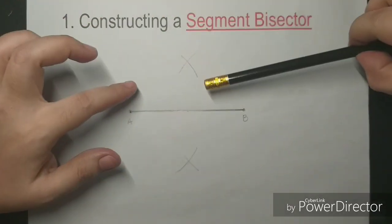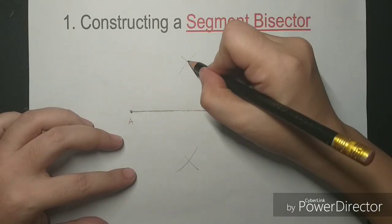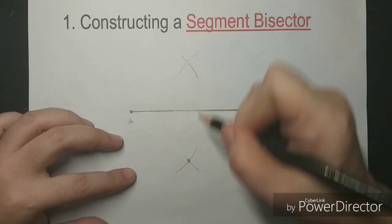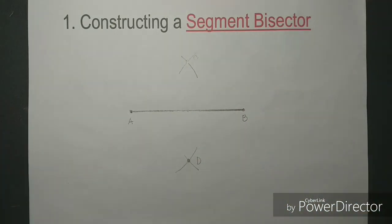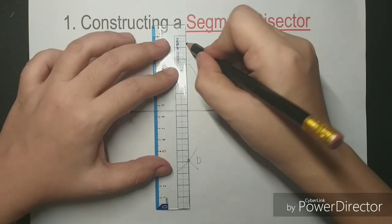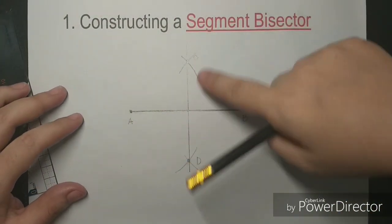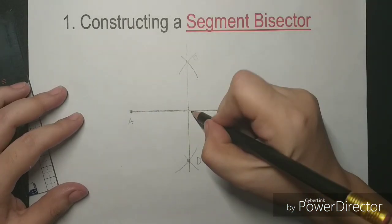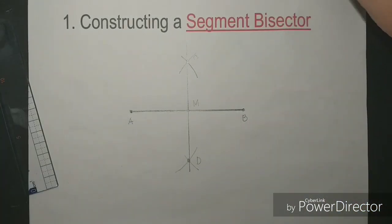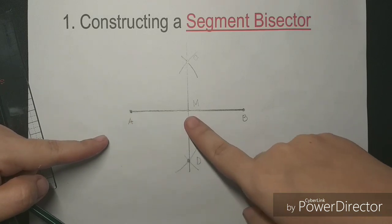Now, we have created two intersecting arcs and they meet at two points of intersection. Let's name these as point C and point D. Now, let's connect these two points using our straight edge or ruler. We have created a line segment CD. You see that CD bisects the line segment AB, and let's name this intersection point as point M. We have created two segments: line segment AM and line segment MB.